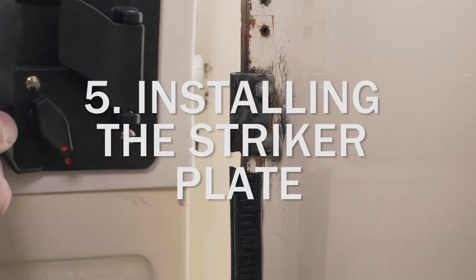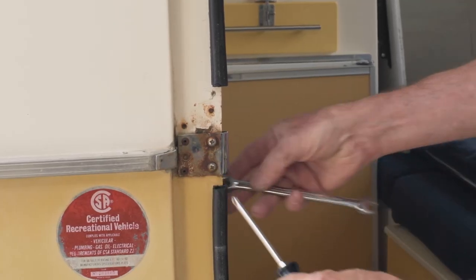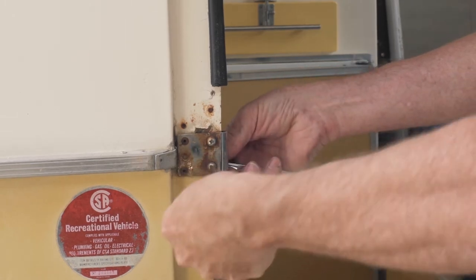Close the door and see if the original striker plate will latch. In most cases the latch will not engage the original striker plate and the supplied aluminum striker plate will need to be installed.